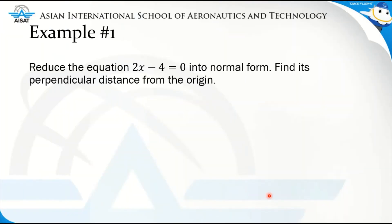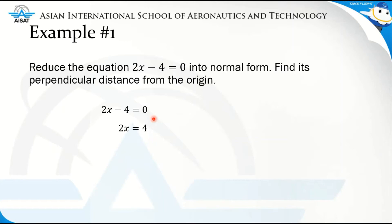For the first example, we are asked to reduce the equation 2x minus 4 is equal to 0 into its normal form and find its perpendicular distance from the origin. This is under case one since we don't have a value for b, so we just solve for x. We have 2x minus 4 equals 0; transposing negative 4 gives 2x equals 4, and dividing both sides by 2 gives x is equal to 2.